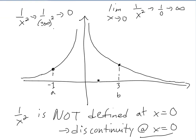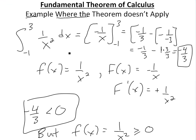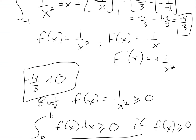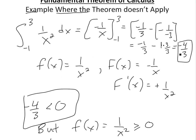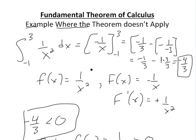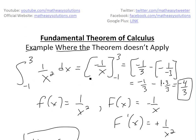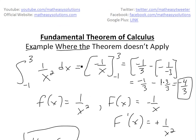So just remember when applying the fundamental theorem, make sure the function is continuous on the interval — in this case, negative one to three. Here it isn't, so you can't apply it and you'll get messed up answers. Also make sure you check your answer: if you get a negative but the function is always positive, the area under it can't be negative. Remember, you can download these notes in the Dropbox link below. Stay tuned for another math easy solution.